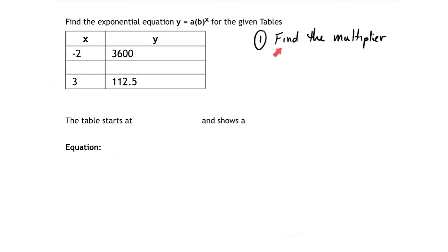The first step you have to do is you have to find the multiplier. The multiplier you're going to find by using this formula. Multiplier equals the gap root of the next divided by previous.